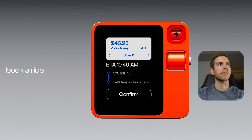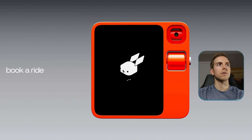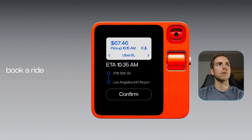Let's take a look at a couple of examples. 'I have six people with three luggages — find me an Uber that can fit all of us.' For six people and three pieces of luggage, it recommends booking an Uber XL as it provides ample space for all passengers and luggage. Please confirm the ride — the ride shows up, just hit confirm.